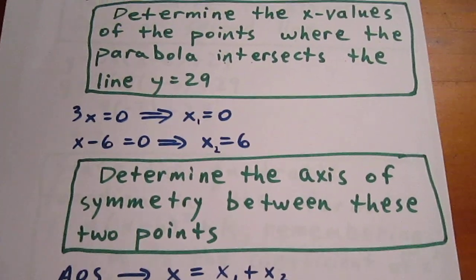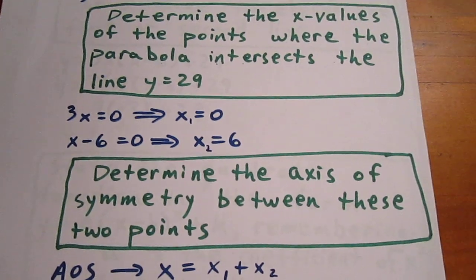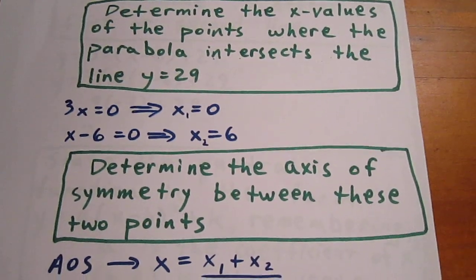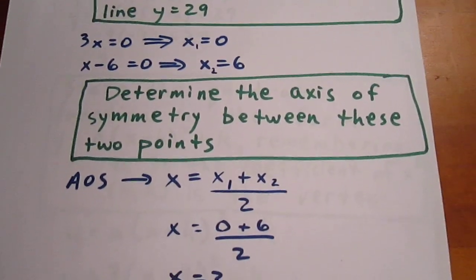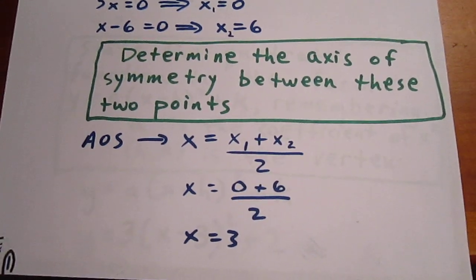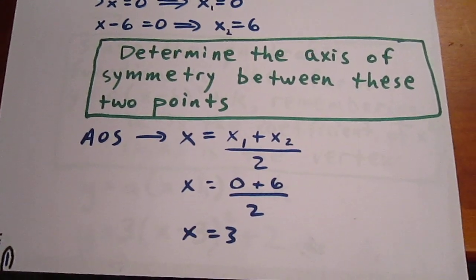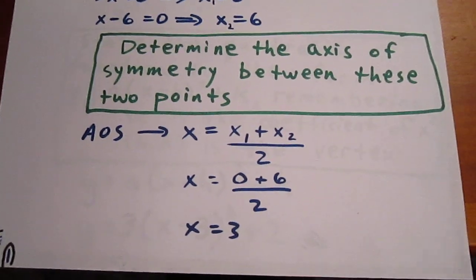We then can determine the axis of symmetry between these two points, and which is therefore the axis of symmetry of the parabola, by evaluating 0 plus 6 over 2, and we find out that the axis of symmetry is at x equals 3.